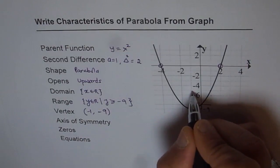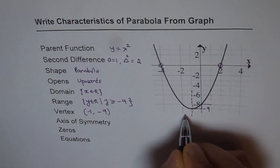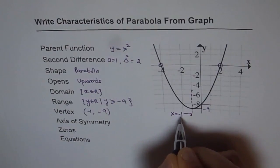Axis of symmetry is the line which goes through the vertex. And this line equation is x equals to minus 1.